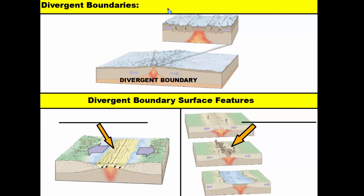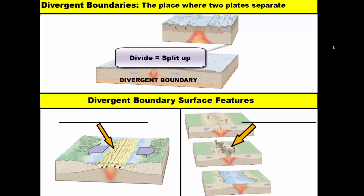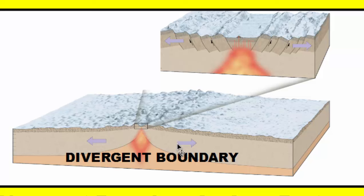I hope you found that clip interesting and it clarified any questions for you. Now we're going to start talking about the different types of boundaries formed by tectonic plates. The first boundary is a divergent boundary, where two plates start to separate. I always remember a divergent boundary as separating because when I think about the word 'divide' — when you divide things up, you split them up, and when you split things up, things are separated.